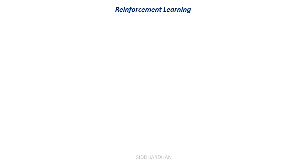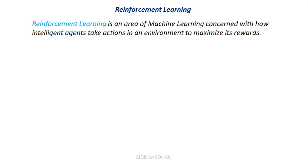The third type is reinforcement learning, which is quite different from both supervised and unsupervised learning. Reinforcement learning is an area of machine learning concerned with how intelligent agents take actions in an environment to maximize rewards. There are four main aspects: environment, agent, action, and reward. There is an environment, and we build an agent that acts within it. The agent tries to take actions in that environment, and for each action it gains some reward.